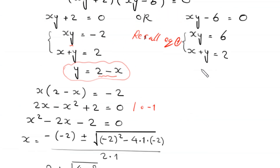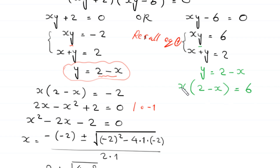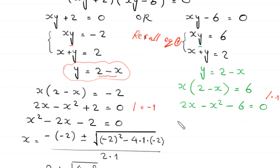For the second system (x plus y equals 2 and xy equals 6): from equation 1, y equals 2 minus x. Substituting, x times (2 minus x) equals 6, giving 2x minus x squared equals 6. Multiplying by negative 1 and rearranging gives x squared minus 2x plus 6 equals 0. This quadratic is not factorable, so we apply the quadratic formula.